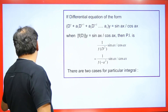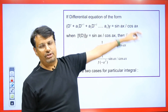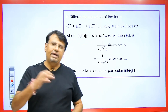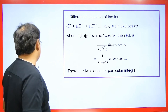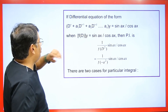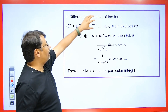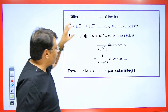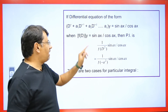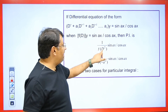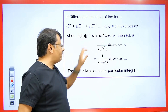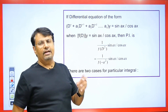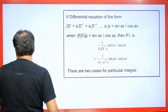Now let's see the particular integral of sin ax and cos ax, and how we find the PI of sin and cos functions. It's very easy. If we are given a differential equation in symbolic form with sin or cos, we take this symbolic form in the denominator. Wherever it is d square, we square the angle and then subtract it. Now I will explain it through an example.